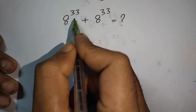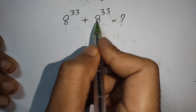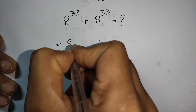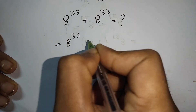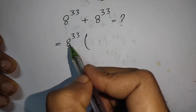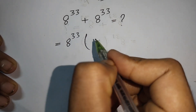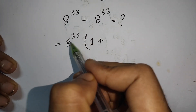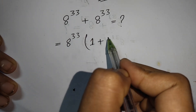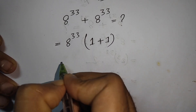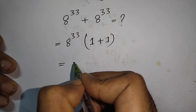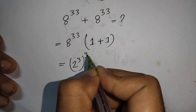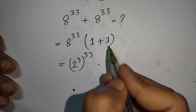Next problem: simplify 8^33 plus 8^33. First, take 8^33 as a common factor. Inside the bracket: 8^33 divided by 8^33 equals 1, plus 8^33 divided by 8^33 equals 1, giving 1 plus 1 equals 2. Then 8^33 equals 2 to the power 3, bracket to the power 33.